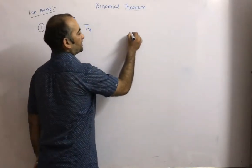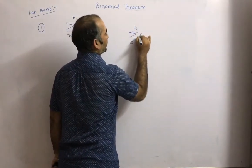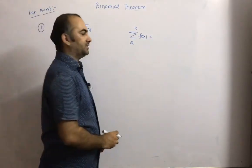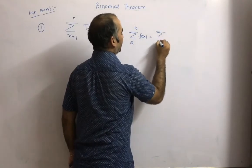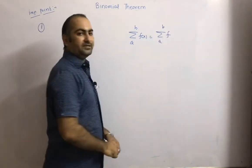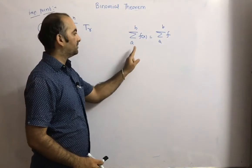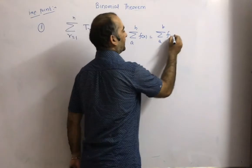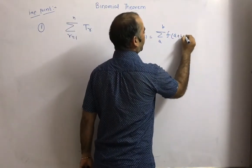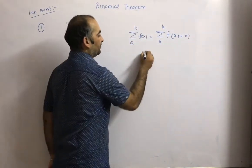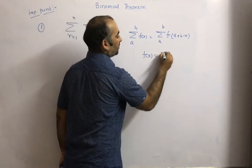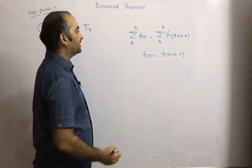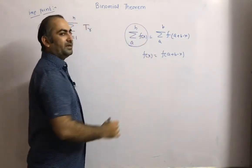We know one formula: sigma from a to b of f(x). This is nothing but sigma from a to b of f(a+b-x) — instead of x we can write a+b-x. So if f(x) equals f(a+b-x), then we can say that sigma from a to b of f(x) is a symmetrical series.